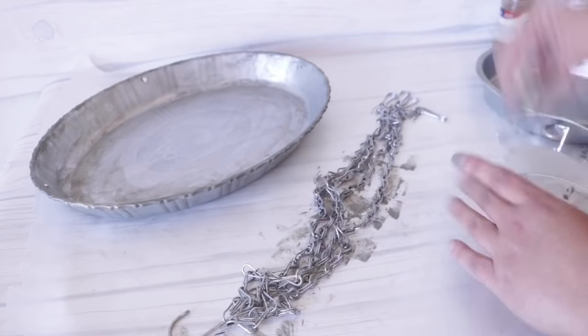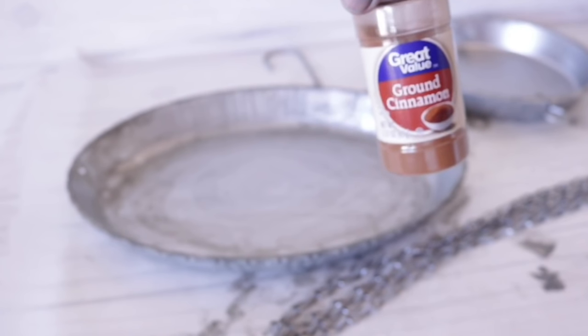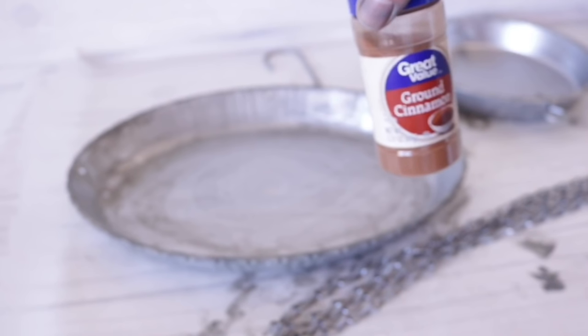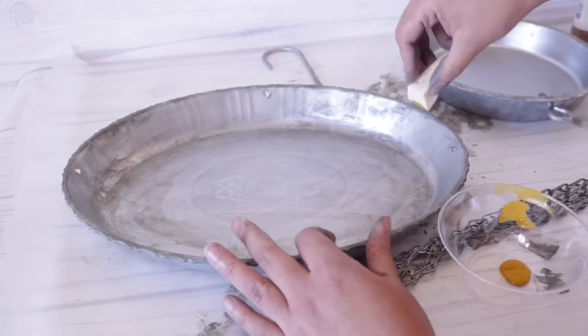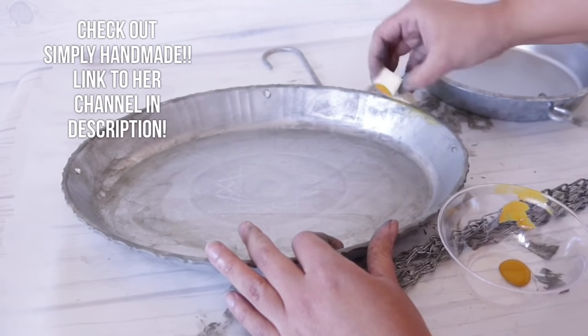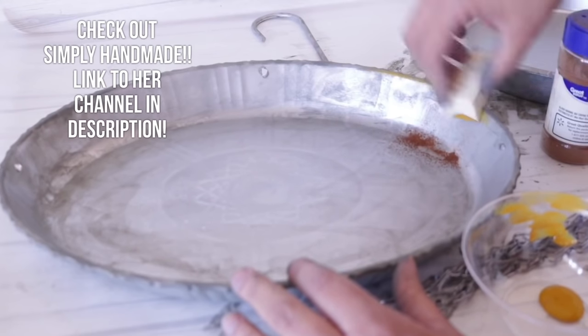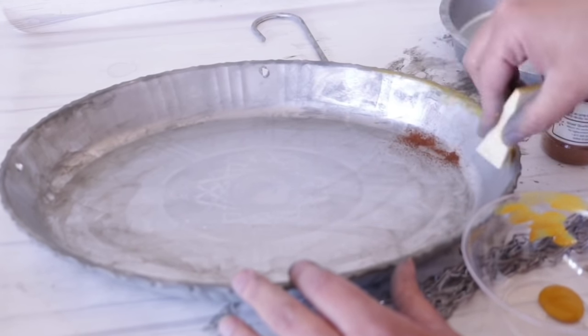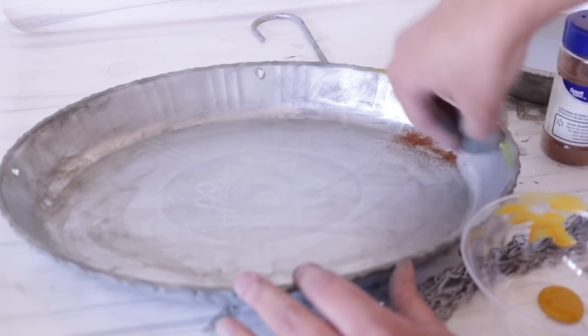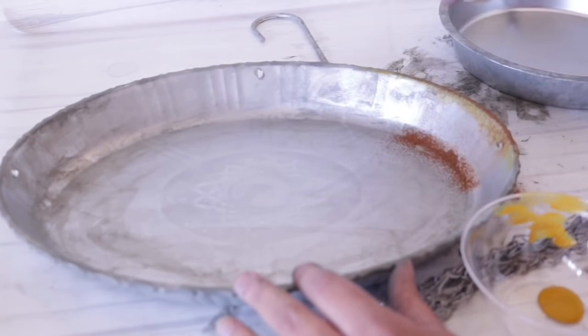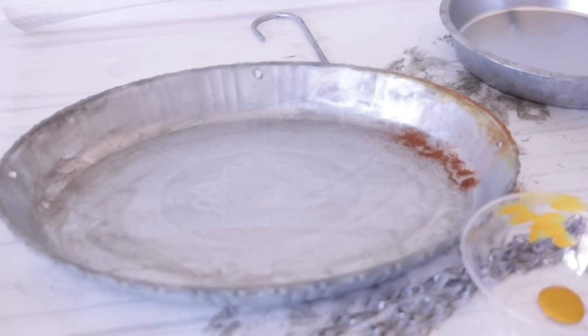Now is when the real fun part begins because we are going to create rust using golden sunset and cinnamon. I did not come up with this technique, this is all over Pinterest. My friend Simply Handmade has used these on her pumpkins before. I'll link her below. I am doing this with a yellow undertone because I think it looks a lot more realistic. Whenever I see rust, I always see fading orange and yellow at the bottom. That's the look that I'm trying to achieve here.